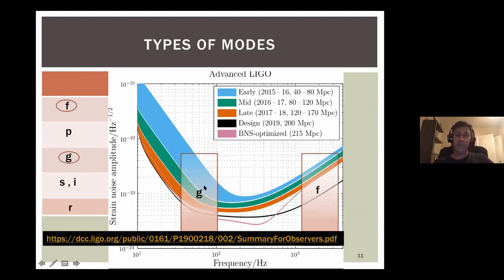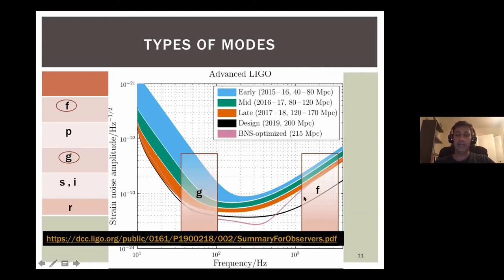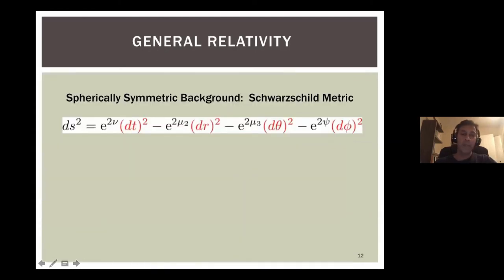Here's a quick graph showing where f and g modes fit in the sensitivity curve. The r-modes might be seen in isolated or accreting systems, but regarding mergers, there are f-modes and g-modes at roughly opposite ends. We have seismic noise and shot noise interfering, but if we can improve sensitivity and keep pushing, hopefully we can find these modes.